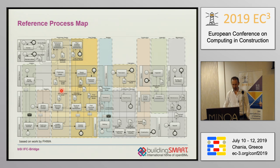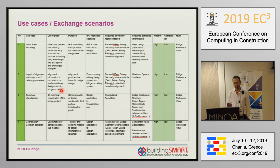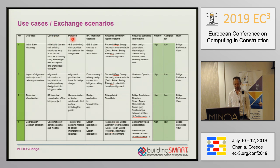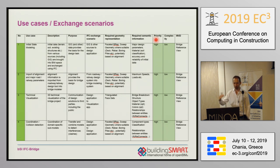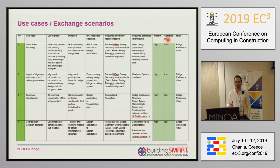The reference process map was the basis for defining the most common use cases, and the exchange scenarios were then translated into a table structure. The table includes a short description of each use case, its purpose, how IFC is supposed to be used, the required geometry representation, and the required semantic information. Based on this, we defined the priority in close collaboration with the expert panel — 150 experts from around the world voted on individual use cases. From a technical point of view, we also assessed the complexity of integrating each use case into IFC. In total, we defined 70 use cases.